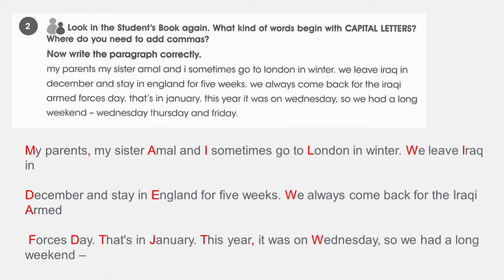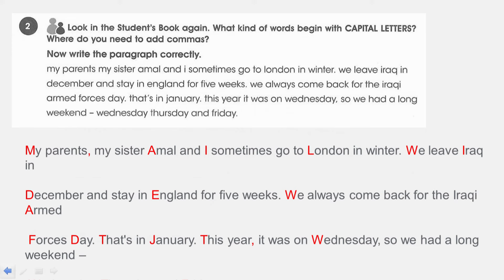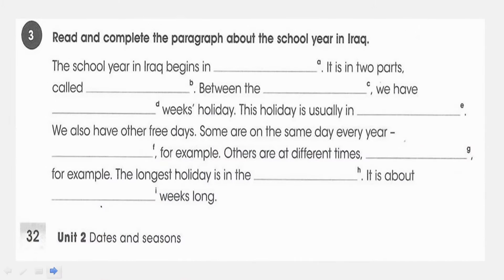The corrected solution is highlighted in red. The paragraph should read continuously: 'My parents, my sister Amal, and I sometimes go to London in winter. We leave Iraq in December and stay in England for five weeks. We always come back for the Iraqi Armed Forces Day. That's in January. This year it was on Wednesday, so we had a long weekend: Wednesday, Thursday, Friday' — notice the commas in the list of days, with 'and' before the last item.